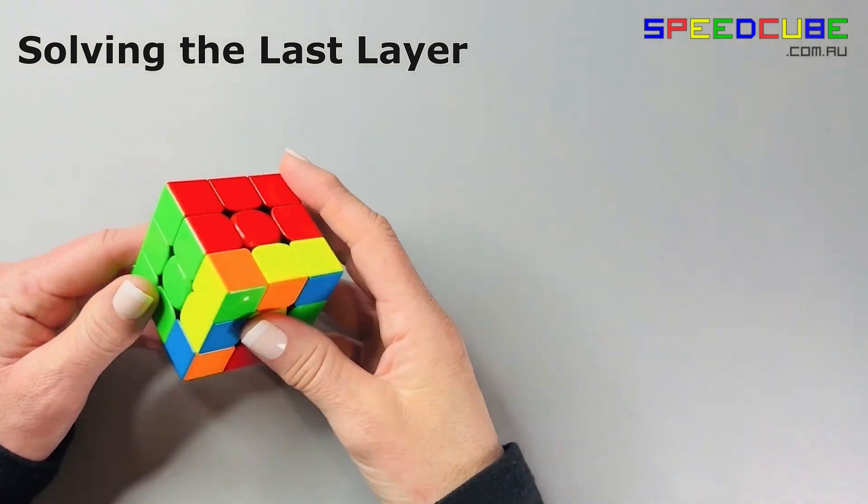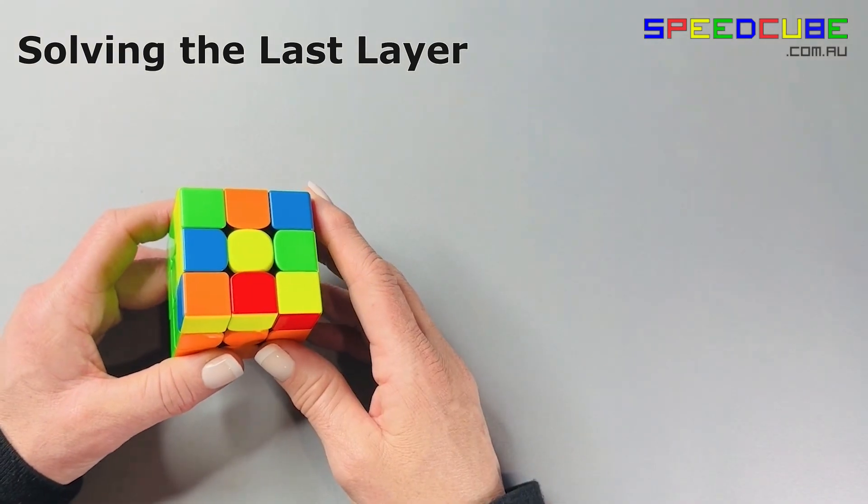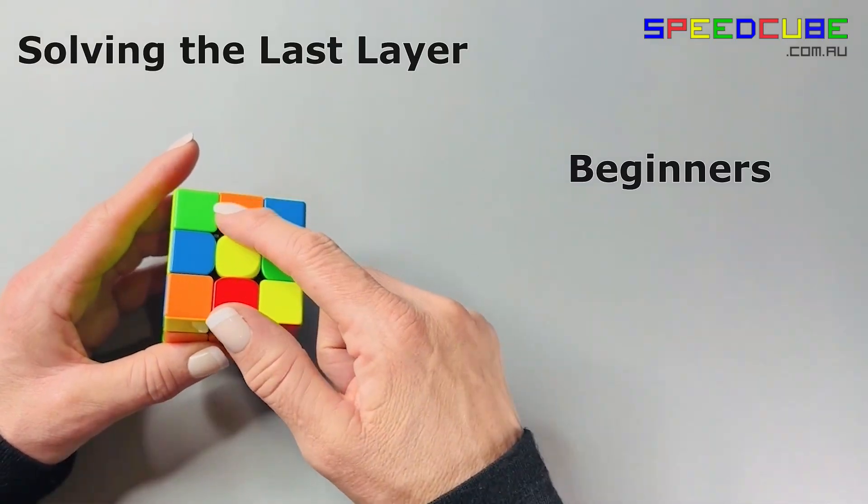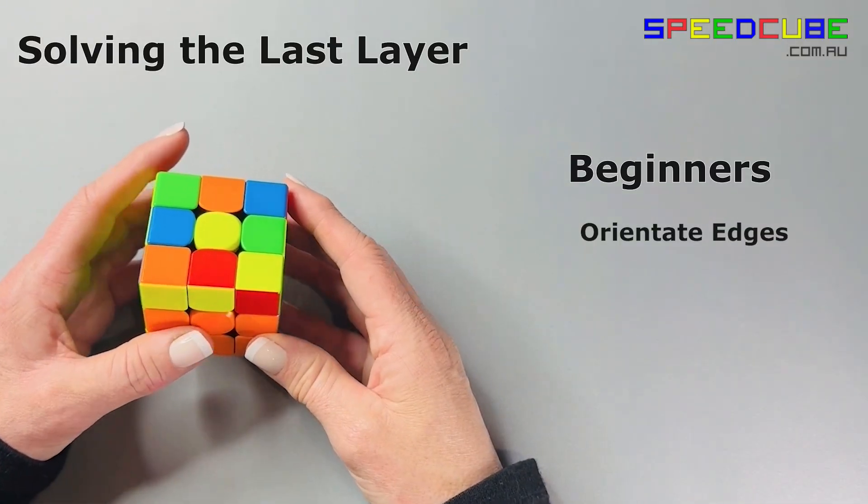There are two main methods to solve the last layer of the Rubik's Cube. The first is the Beginner's Method, where you start by making the last layer cross.